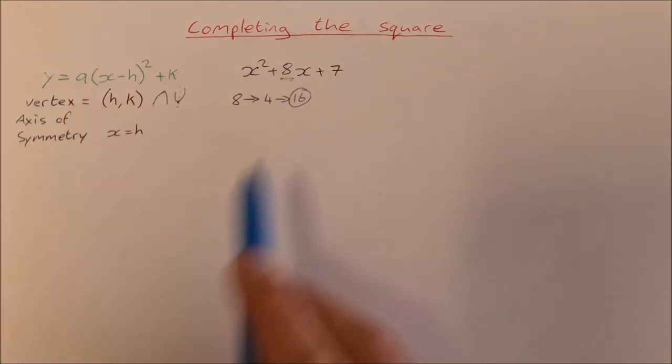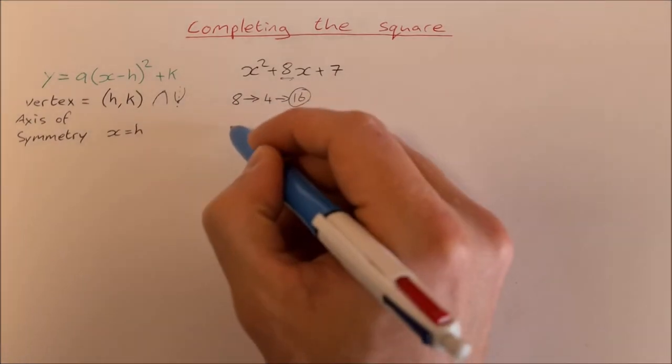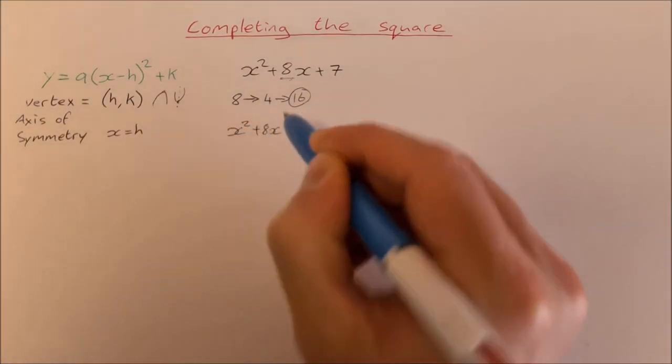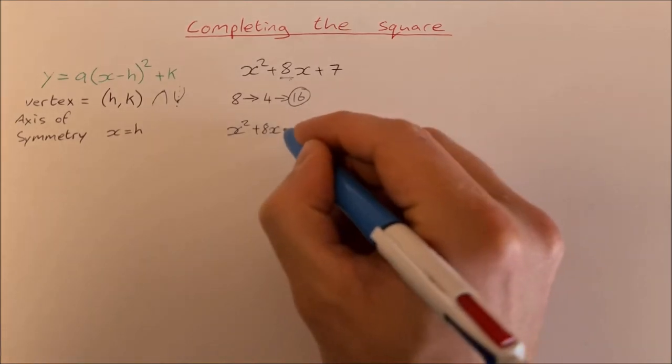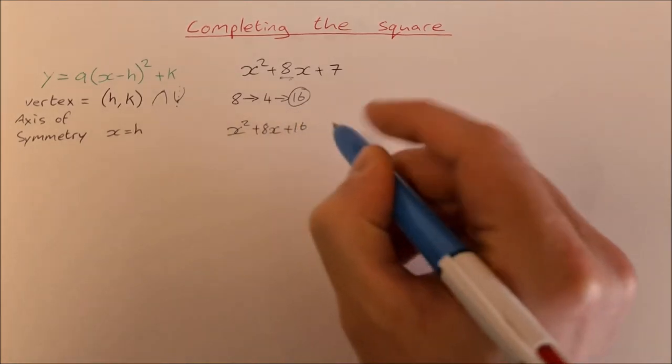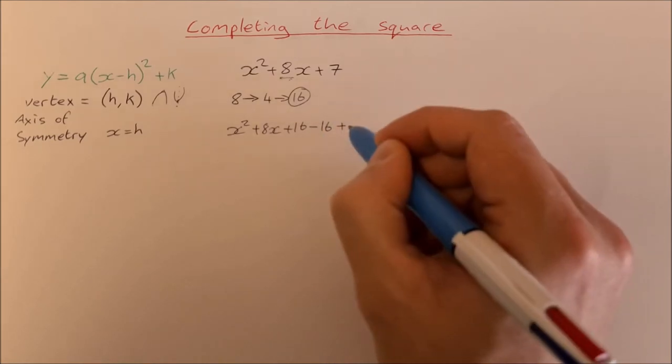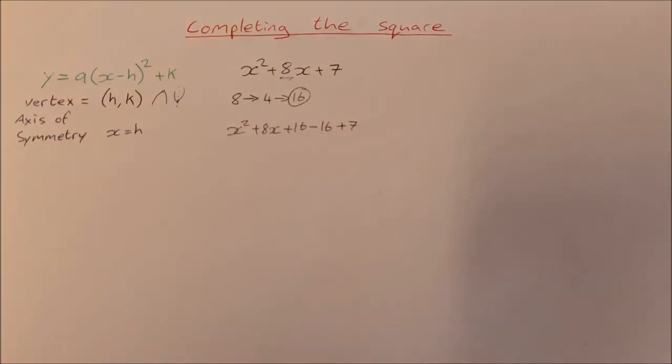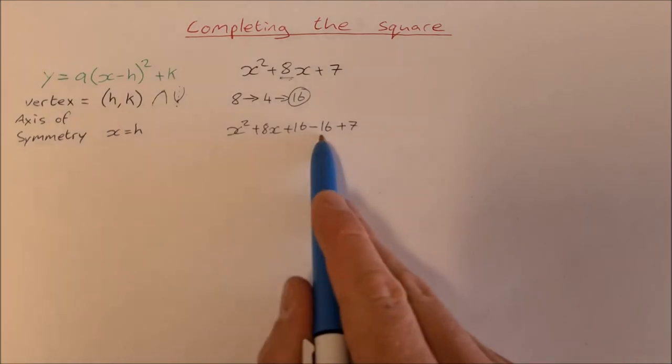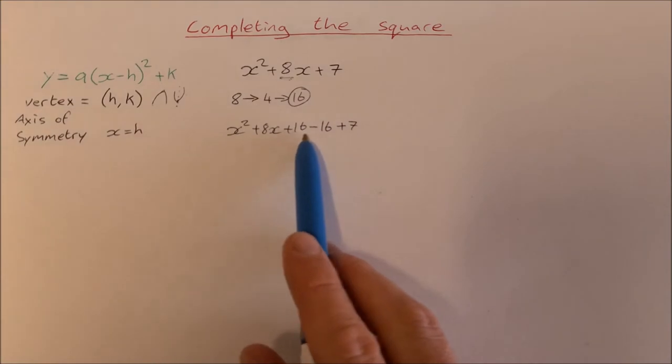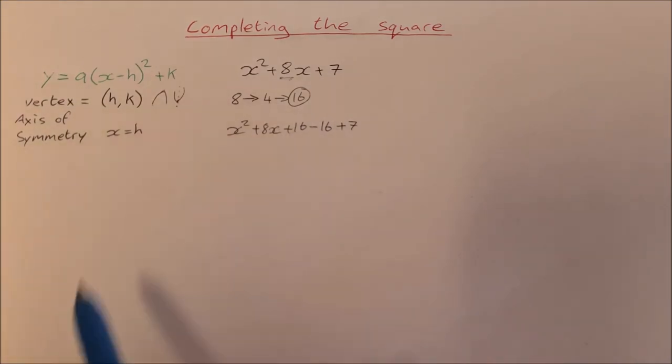Then what we do is rewrite this quadratic: x² + 8x, then we do plus 16, then we do minus 16, and finally the plus 7. So now we have added and subtracted 16, so essentially we haven't added or subtracted anything. 16 minus 16 is 0, so it's all balanced.